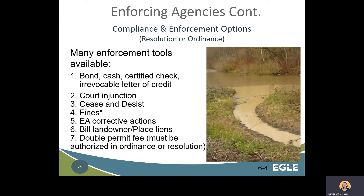Here are some enforcement tools agencies can put into their ordinance or resolution to get people to follow their permits. Using bonds, cash, certified check, or an irrevocable letter of credit is a way to get payment from people not following their permit. An agency may also seek court injunctions, issue a cease and desist order, and issue fines. Enforcing agency corrective actions allow an agency to construct, implement, and maintain SCSC measures to bring a site into compliance, then bill the landowner or place a lien on the property for expenses incurred. An agency may also double the permit fee, which must be authorized in an ordinance or resolution and clearly defined as a fee and not a fine.